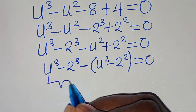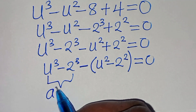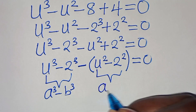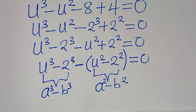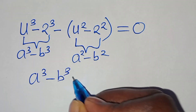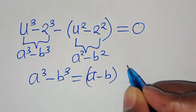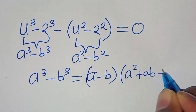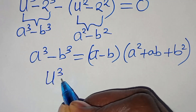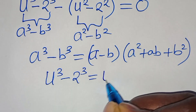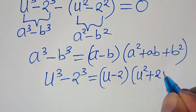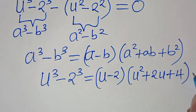Now, we have two parts here. The first part is the difference of two cubes, expressed as a to the power of 3 minus b to the power of 3, and the second part is the difference of two perfect squares, expressed as a squared minus b squared. From the first part, a to the power of 3 minus b to the power of 3, which we can express as a minus b, times a squared plus a times b, then plus b squared. Applying this identity, u to the power of 3 minus 2 to the power of 3 can be expressed as u minus 2, times u squared plus 2u, then plus 4. Let's call this equation 1.